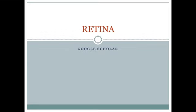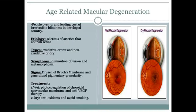Today we are going to discuss retina. The first topic is age-related macular degeneration — a degeneration of the macula because of aging. It is common in people over 55 and is a leading cause of irreversible blindness in developed countries. The cause is sclerosis of the arteries that nourish the retina.